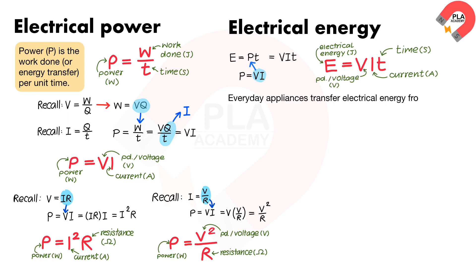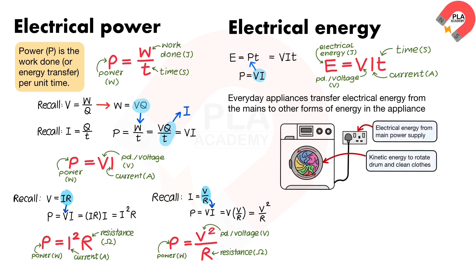Everyday appliances transfer electrical energy from the mains to other forms of energy in the appliance. For example, in a washing machine, this will transfer electrical energy into kinetic energy. The amount of energy an appliance transfers depends on how long the appliance is switched on and the power of the appliance.